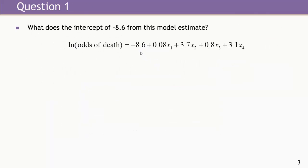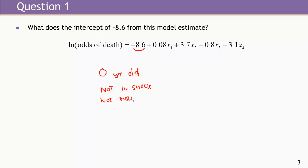What does this intercept of negative 8.6 estimate? It literally is the estimate of the log odds of death for subjects whose x's are all zeros — people who are zero years old, not in shock, not malnourished, and not under the influence of alcohol. This group doesn't exist; we don't have any newborns in these data. The intercept is just a placeholder, but we need it to specify the entire line.